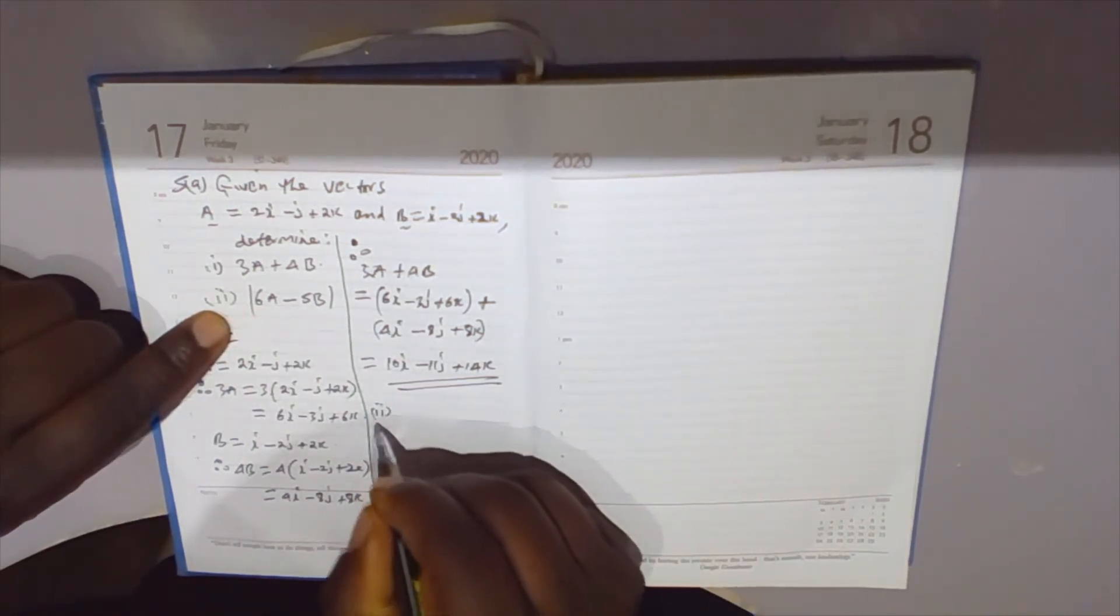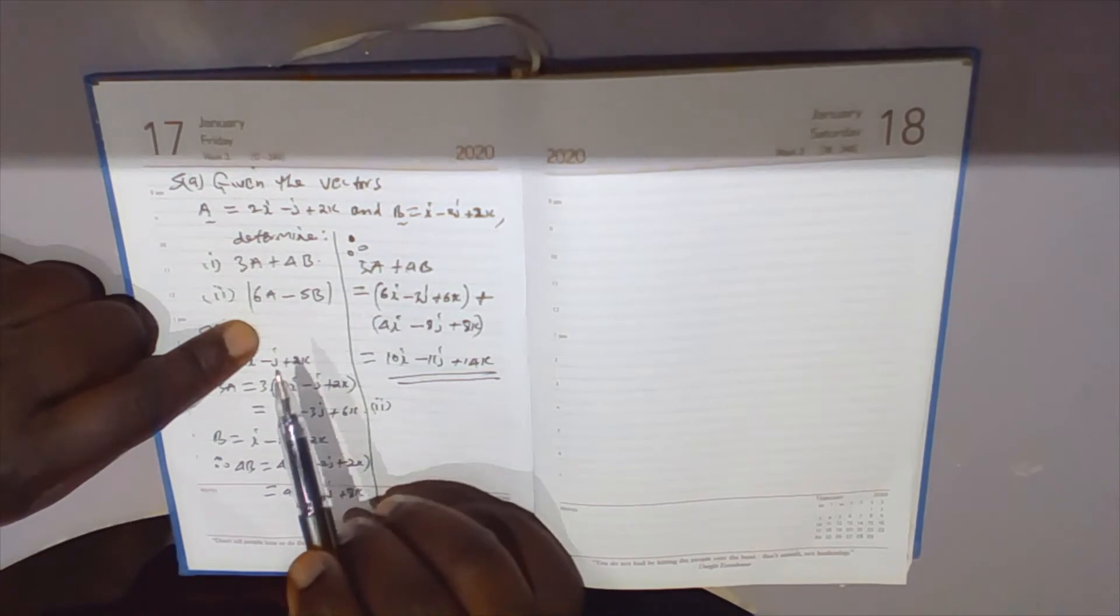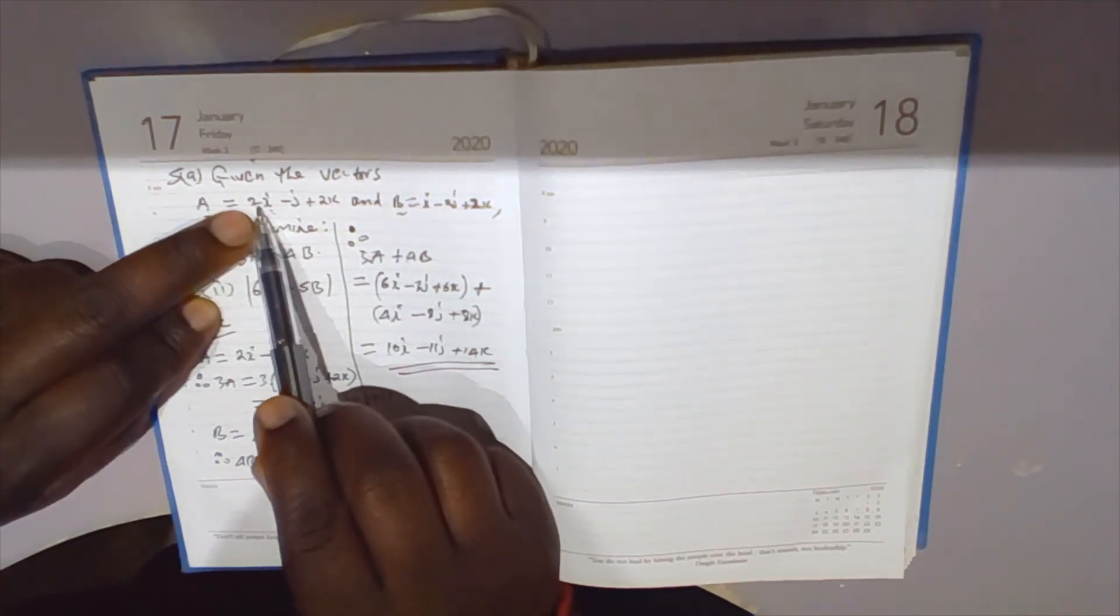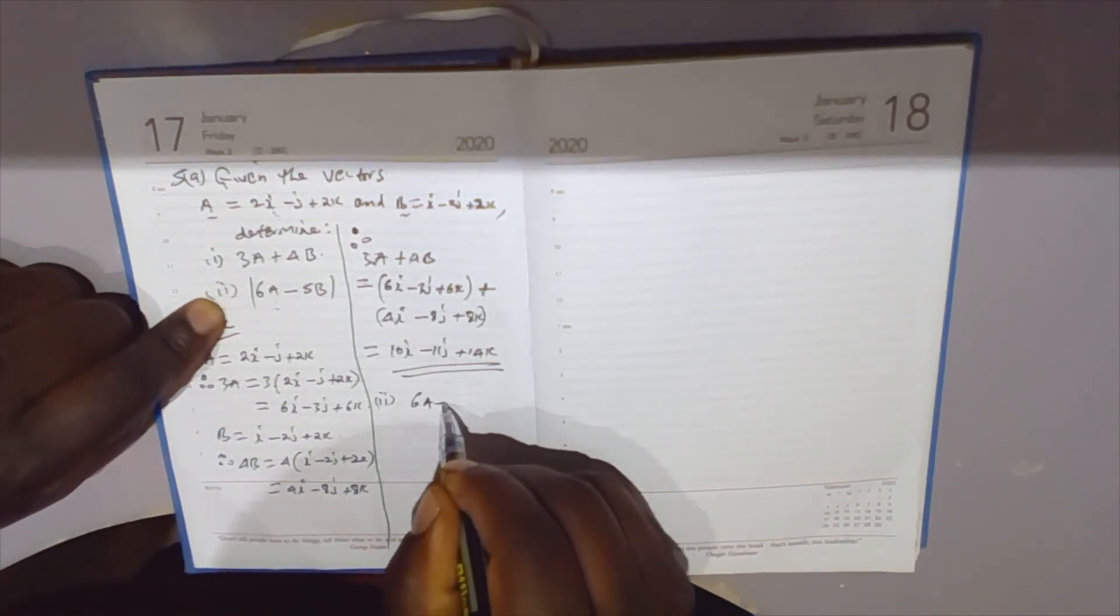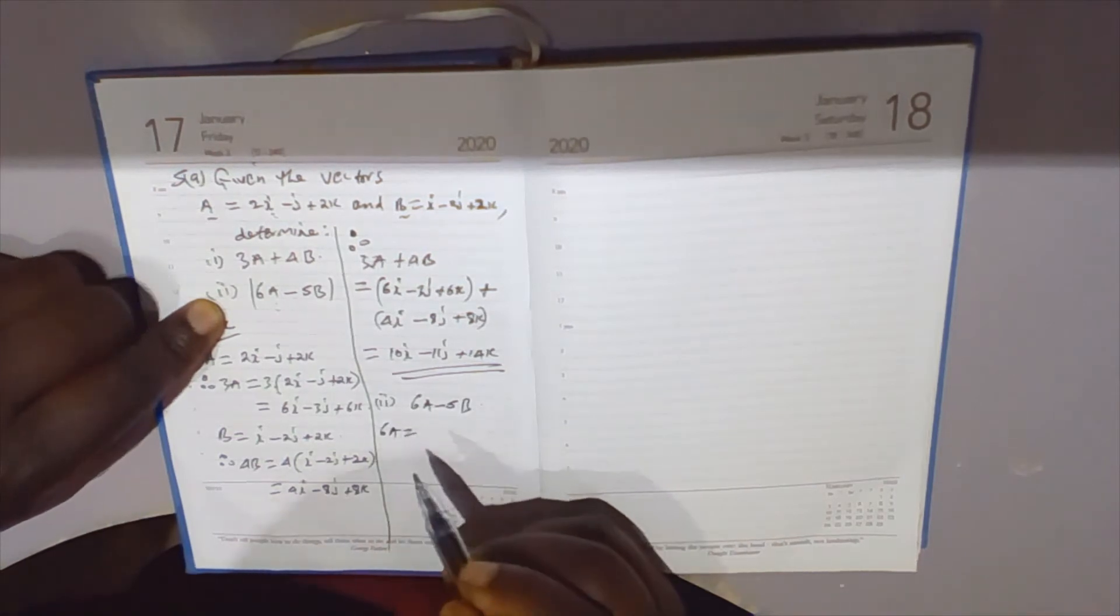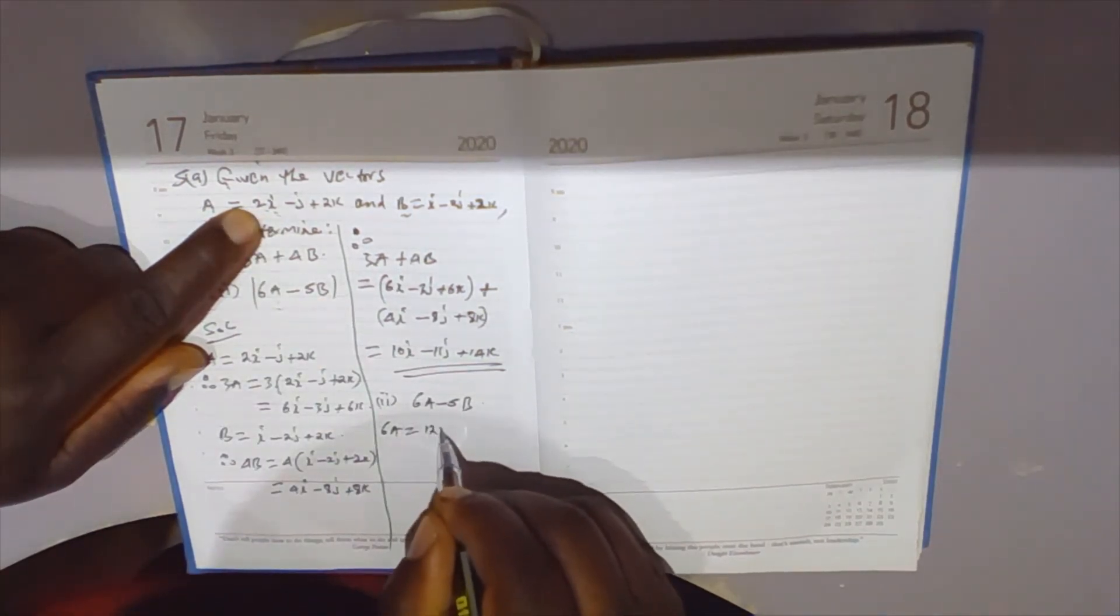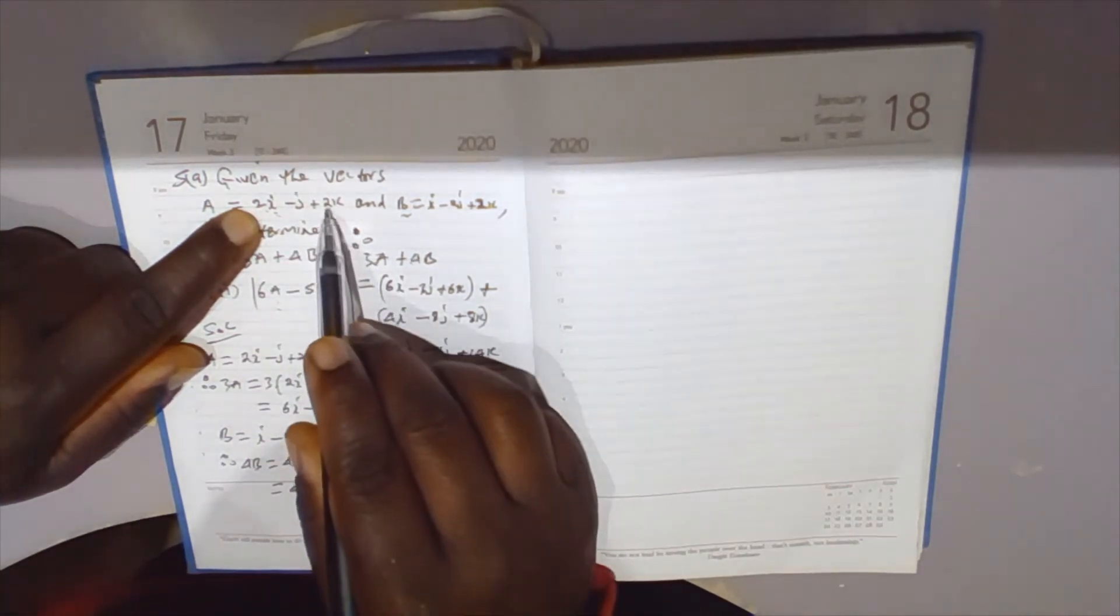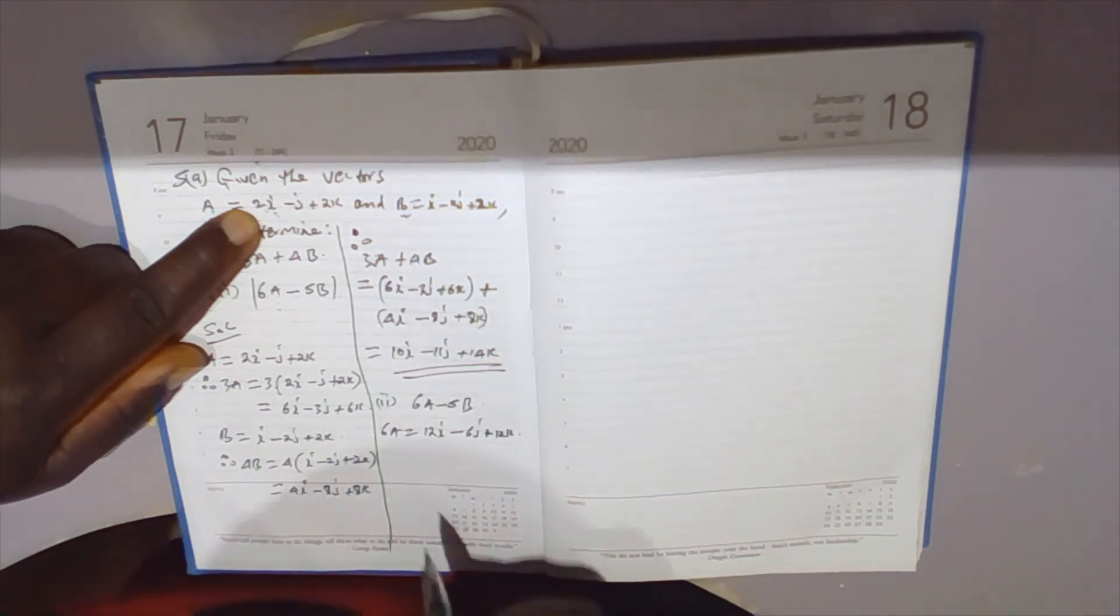For part two, we need to find the modulus of 6a minus 5b. First, 6a: since a equals 2i - j + 2k, we multiply through by 6. So 6a equals 12i minus 6j plus 12k.